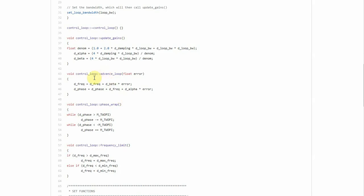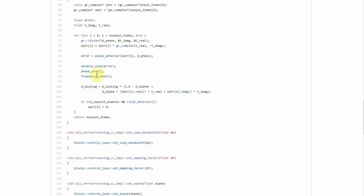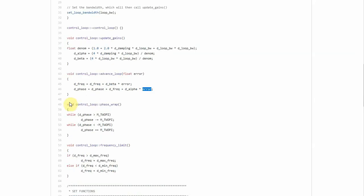So advanced loop is what it is doing is that d_freq equals d_freq plus d_beta times error. So it is scaling the error through Ki, the integrator constant. And scaling the error with alpha, the proportional constant. And updating the phase as phase equals phase plus alpha times error plus the frequency part.